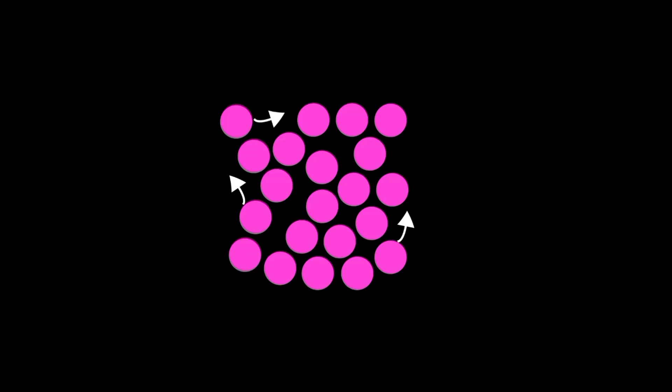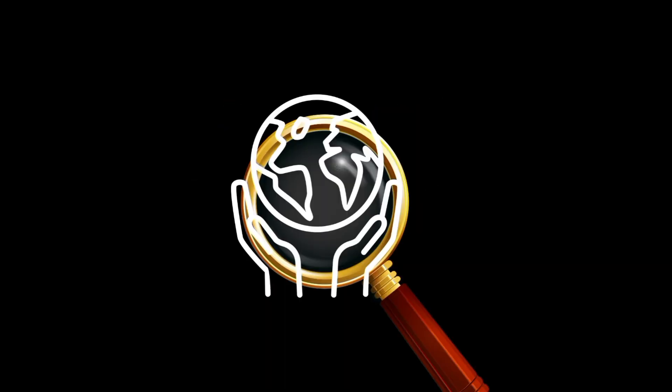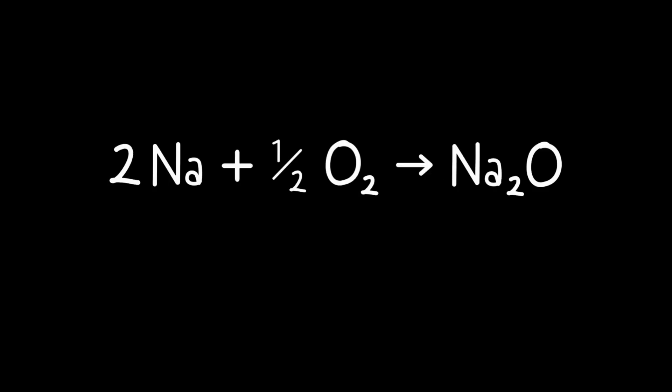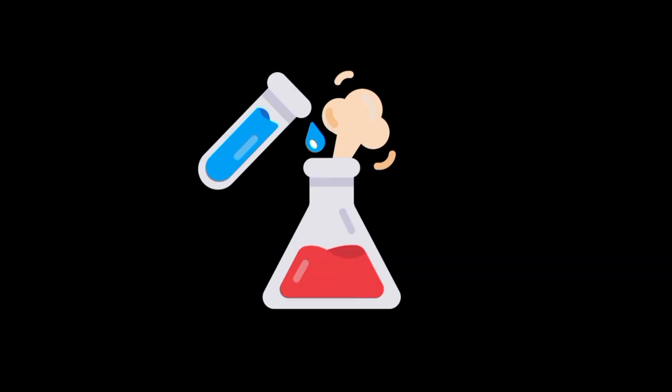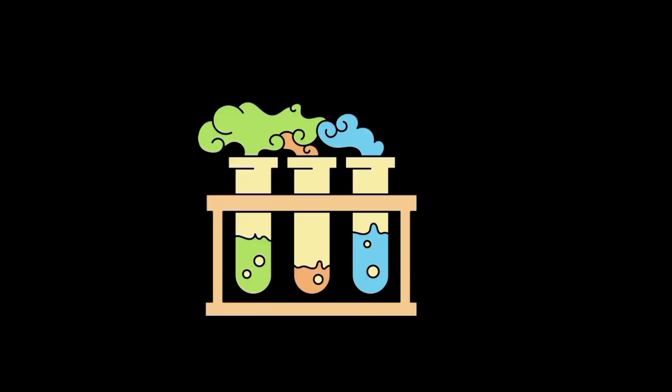After understanding the mole concept, next we need to learn about balanced chemical equations. A balanced chemical equation follows the law of conservation of mass, which states that matter cannot be created or destroyed in a chemical reaction. This means the number of atoms for each element must be the same on both sides of the equation, and the total number of atoms for each element involved in the reaction must remain constant.